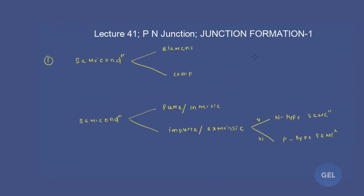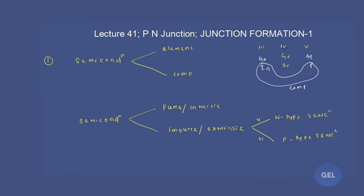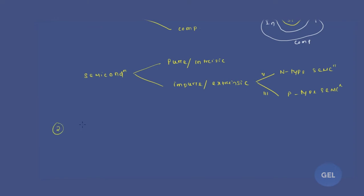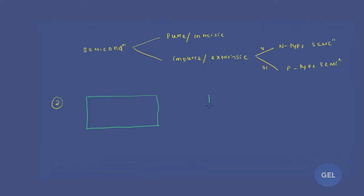Element type and compound type refer to the groups of elements used. The fourth group contains germanium and silicon — these are element-type semiconductors. The third group has gallium and indium, and the fifth group has arsenic and phosphorus. If you combine elements from the third and fifth groups, they form compound-type semiconductors like gallium arsenide or indium phosphide. Taken alone, elements like silicon or germanium form element-type semiconductors.